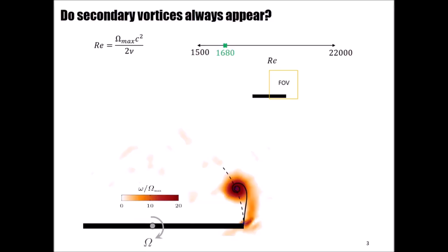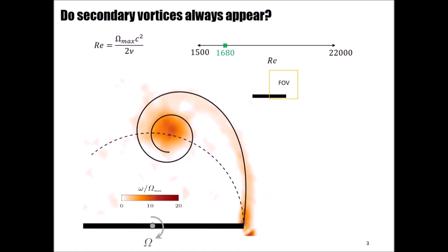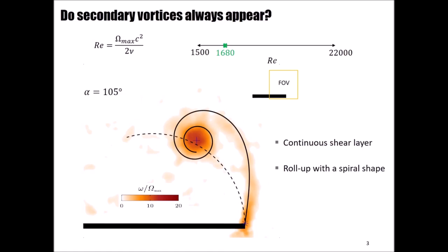The lowest tested speed is 30 degrees per second, which corresponds to a Reynolds number, defined with the maximum rotational speed as the velocity parameter, of 1680. The animations I'm going to show you next are made with a field of view rotating with the rotating plate. The shear layer is observed as a continuous layer of fluid that rolls up into the primary vortex core. If we now take the snapshots corresponding to an angular position of 105 degrees, we can see that the continuous shear layer rolls up into the primary vortex core with a spiral shape.